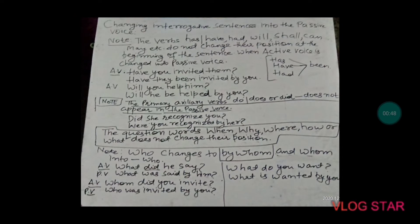Meaning, this is how our sentence works: have, has, will, shall, can, may — in interrogative questions, these auxiliaries remain at the beginning.